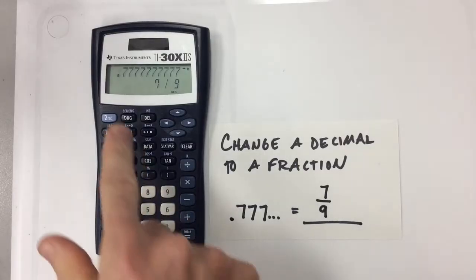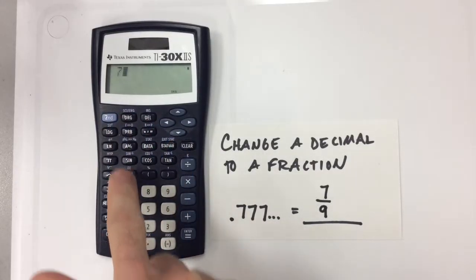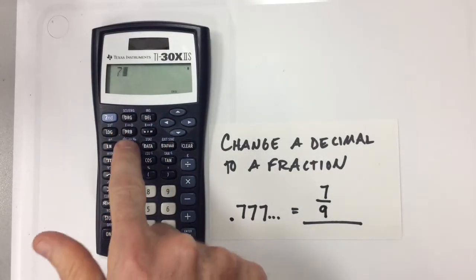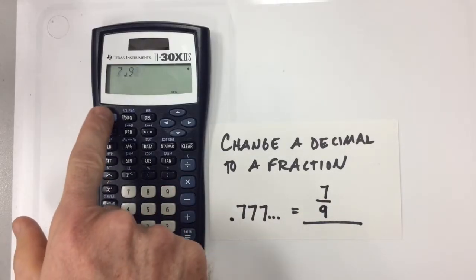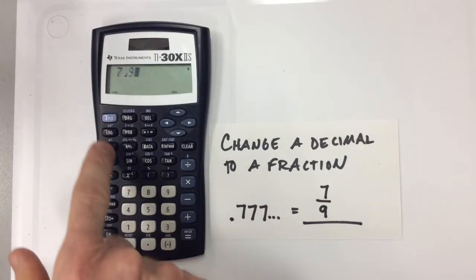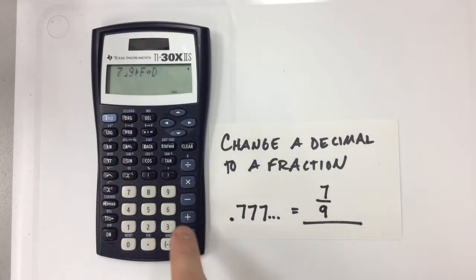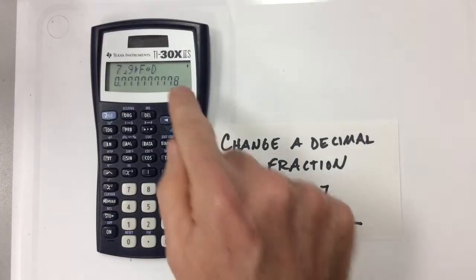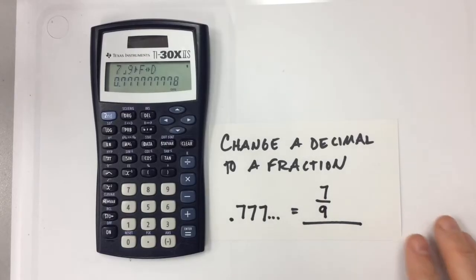Let's say I have the fraction seven-ninths. I'll clear it out and input seven-ninths again — let's say I want to make that a decimal. You could hit second, hit the same thing, and it would do that for you. It rounds off to eight because it continues going, but it's actually seven repeating there forever and ever.